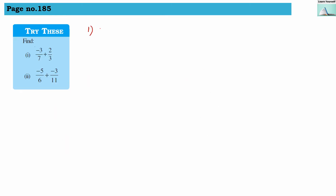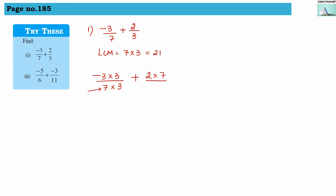Now let us solve the next set. The first one is minus 3 divided by 7 plus 2 divided by 3. Here we have to take the LCM. Our LCM is 7 into 3, which equals 21. So we write minus 3 into 3 divided by 7 into 3, multiplying above and below by 3 to convert the denominator to 21, plus 2 into 7 divided by 3 into 7, converting to 21.